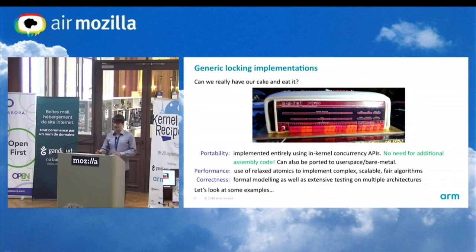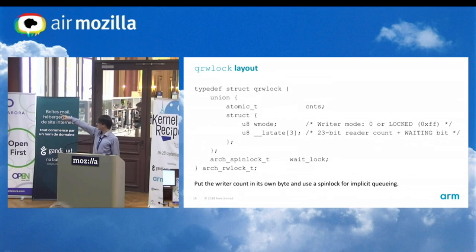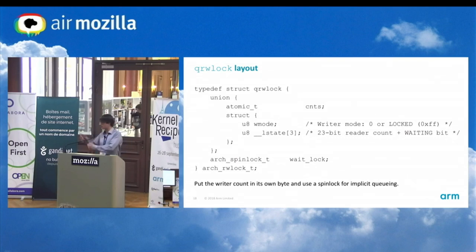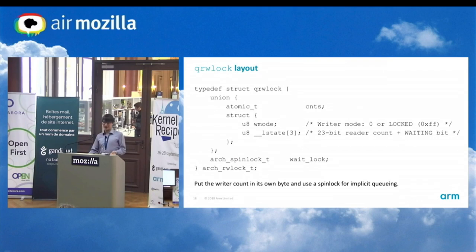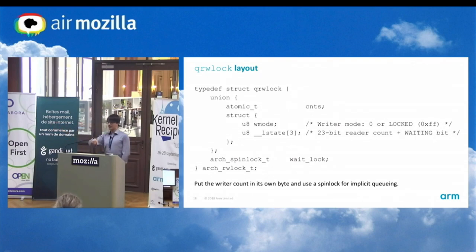Here's the queued read-write lock (QRW lock). We take a union of an atomic_t — the counts — and then we've got a struct overlaying it. So we can do things like smp_store_release to individual members of the struct, or atomic cmpxchg on the whole word. This design lends itself to using all the APIs we already have — you don't have to start rolling assembly. Architectures just select a Kconfig symbol and include a file and they get the queued read-write lock.